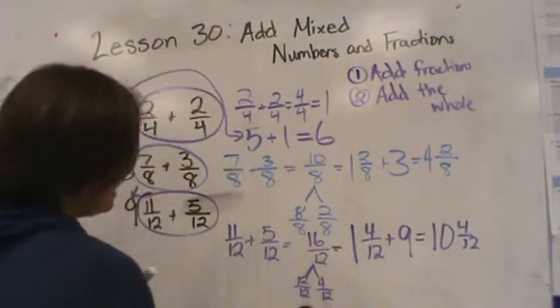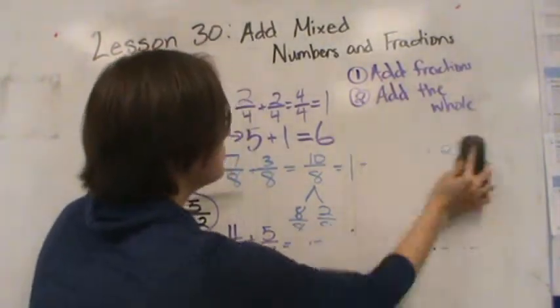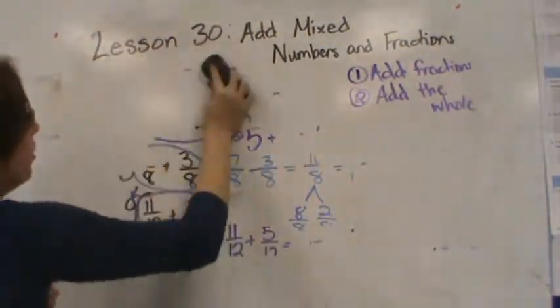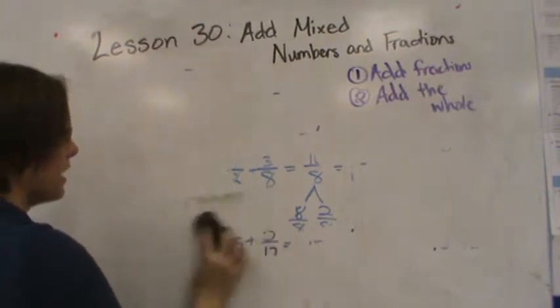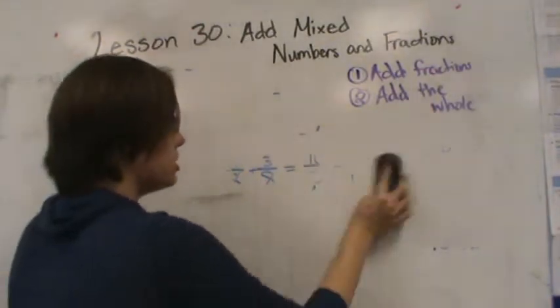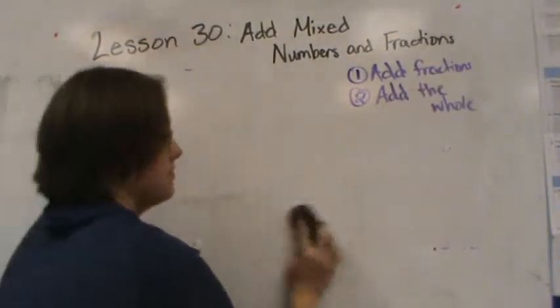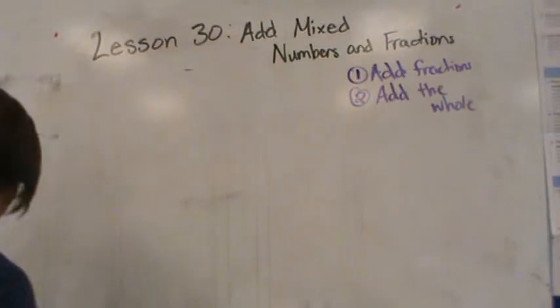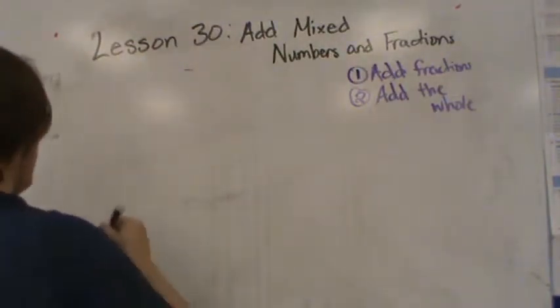So that's what we're doing today — pretty easy. You just add the fractions first and then add the whole. Don't forget to convert the fractions into a mixed number first if necessary, before you add the whole.